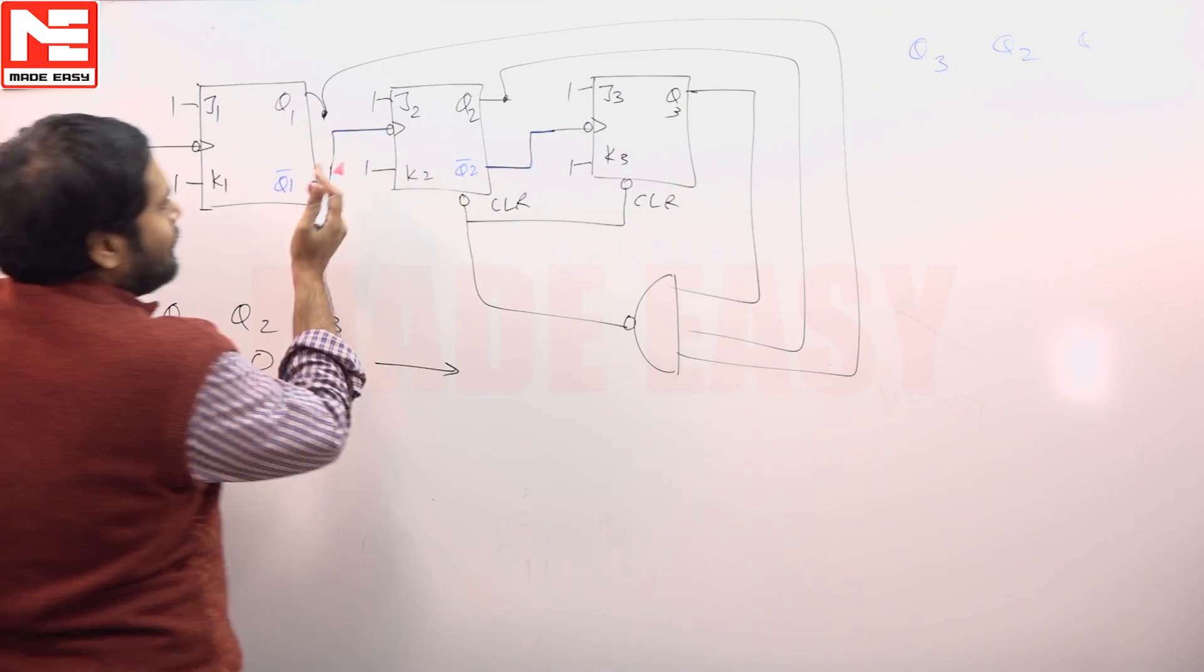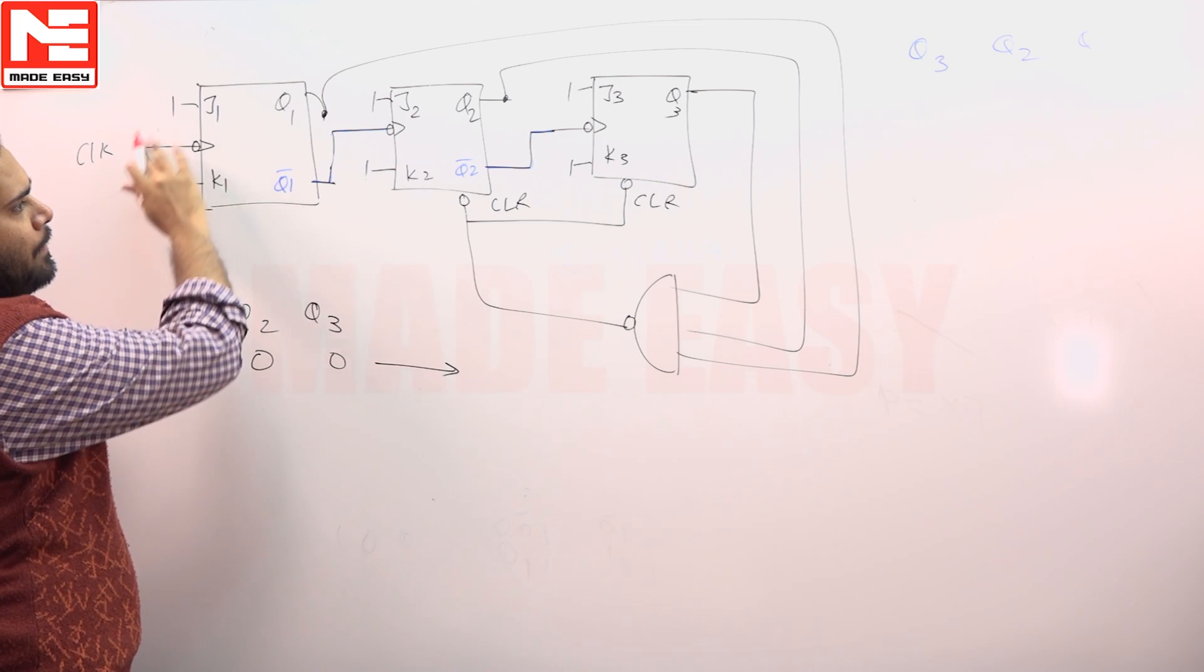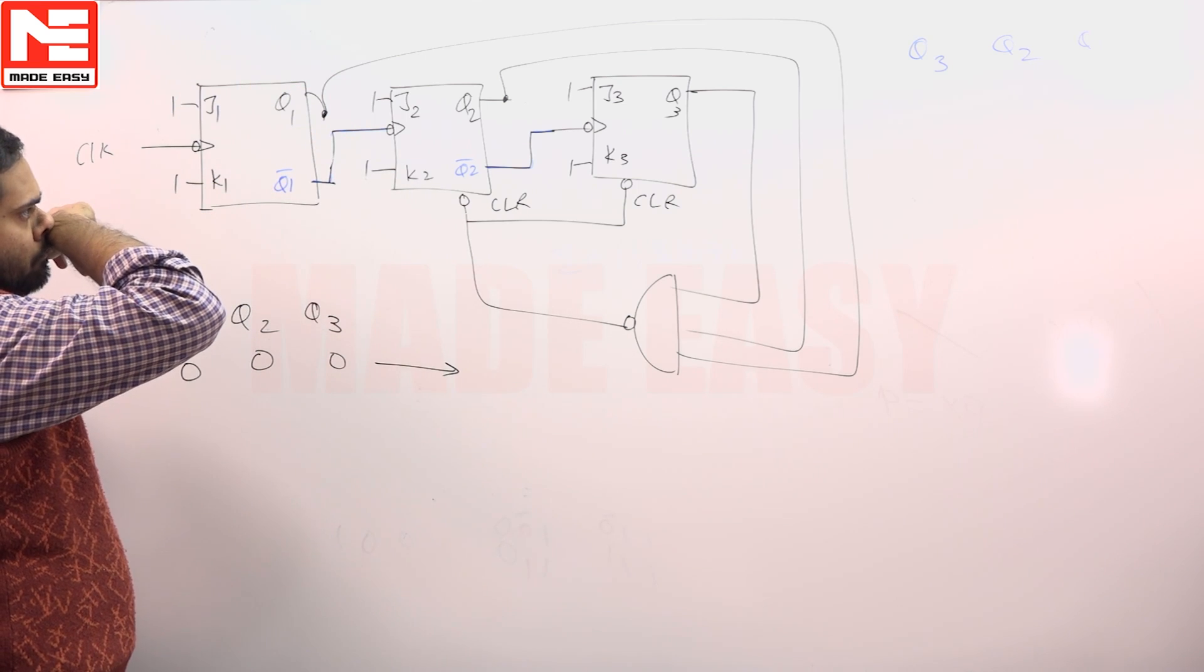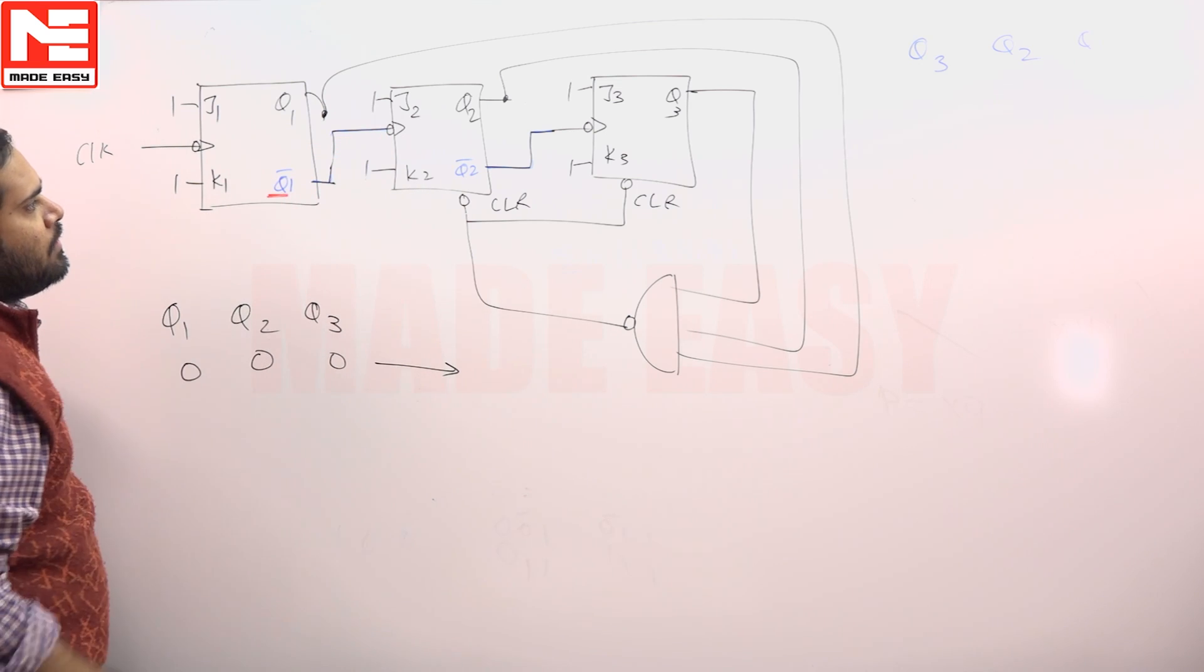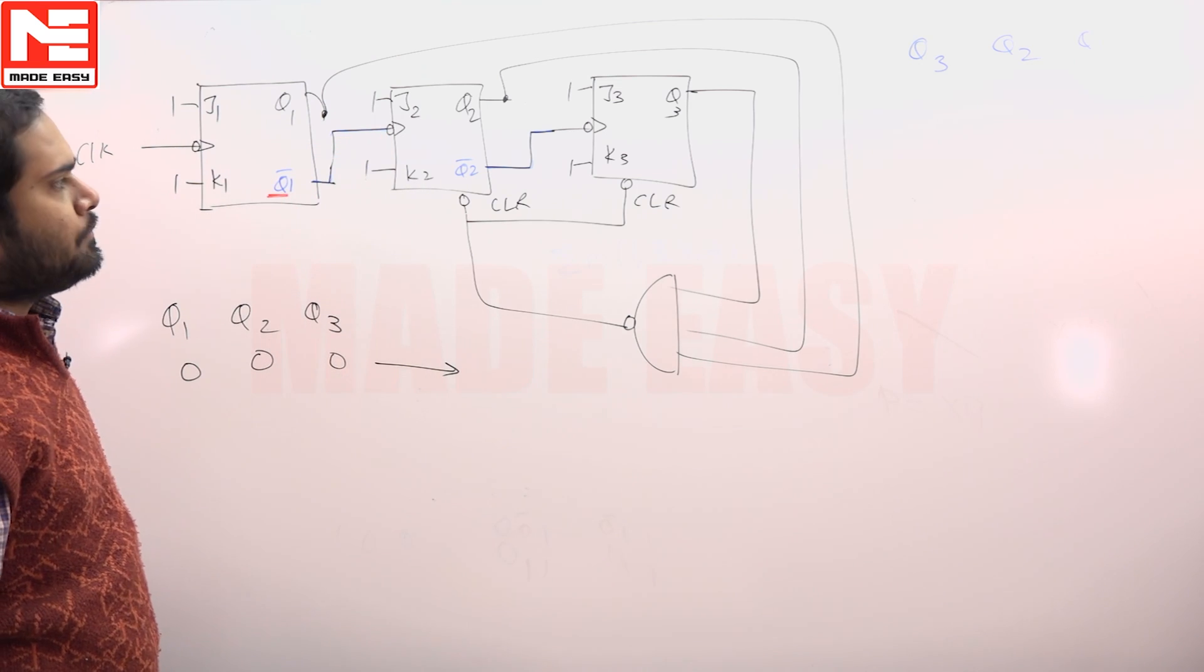This question actually is not a complete down counter. See, Q1 bar is connected with an inversion, so it is basically a system that will behave as a down counter, not an up counter.